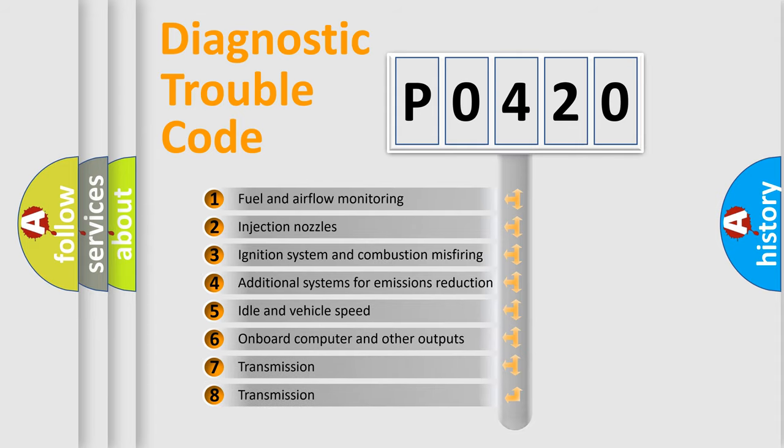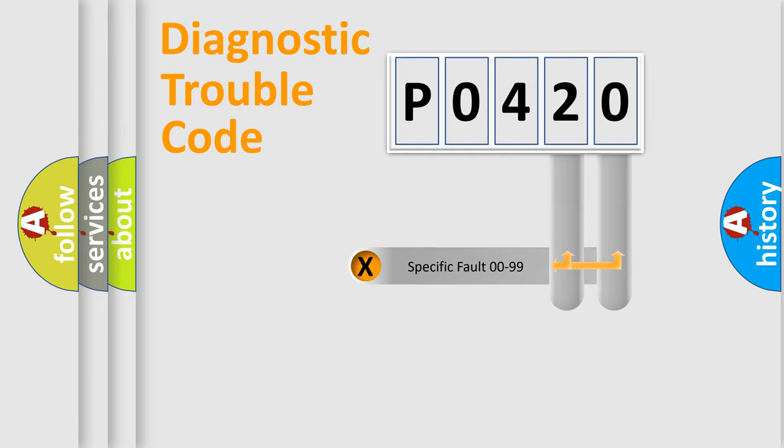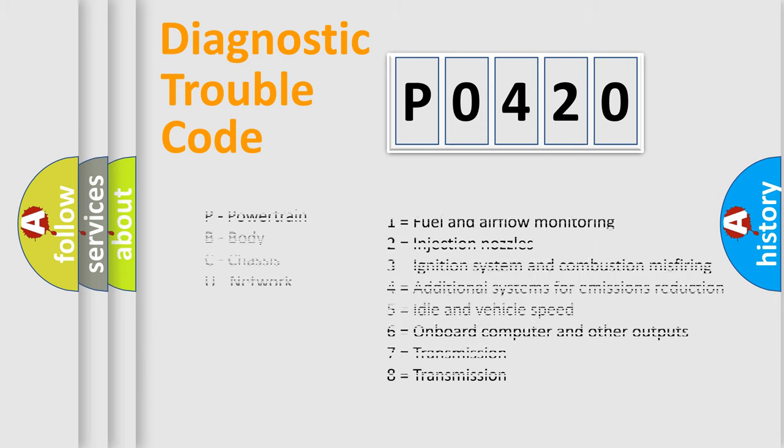The third character specifies a subset of errors. The distribution shown is valid only for the standardized DTC code. Only the last two characters define the specific fault of the group. Let's not forget that such a division is valid only if the second character code is expressed by the number zero.